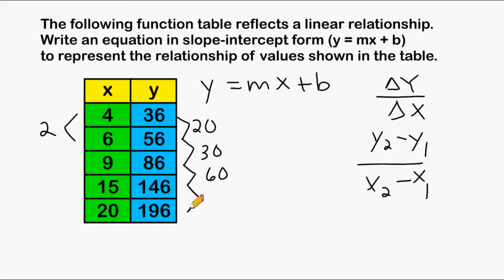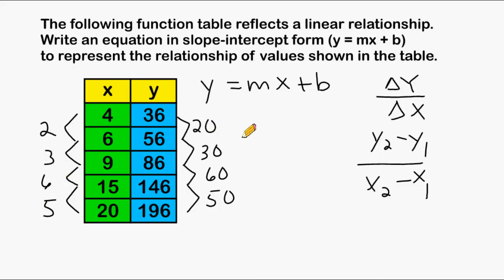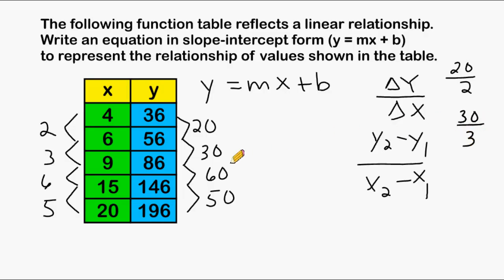And from 86 to 146, that's a change of 60. And from 146 to 196, that is a change of 50. Over here, from 6 to 9 is an increase of 3, from 9 to 15 is an increase of 6, and from 15 to 20 is an increase of 5. So the first change in y over the first change in x is 20 over 2, the next is 30 over 3, then 60 over 6, and the last pair is 50 over 5.